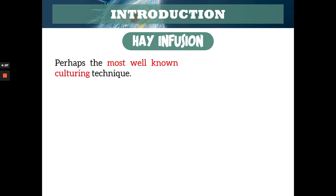Now we're going to the hay infusion proper — the activity itself. It's perhaps the most well-known culturing technique. When you say culturing, it's the artificial growing of microorganisms in vitro — outside of their natural habitat. In this case, we are growing protozoa outside of their natural habitat, like pond water or rainwater. We are culturing them — artificially growing them in the laboratory.